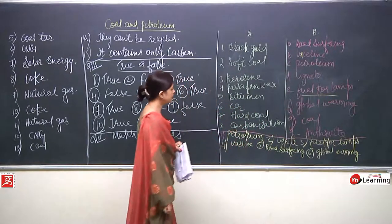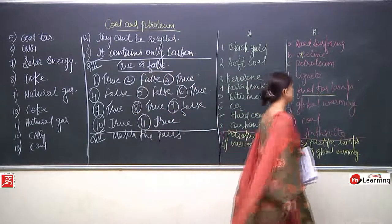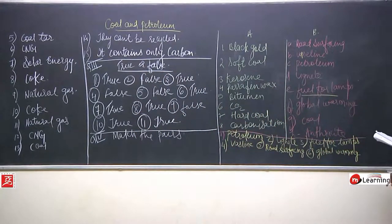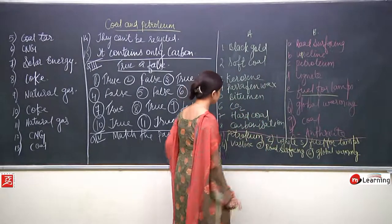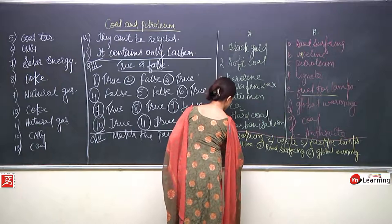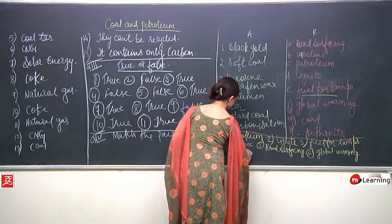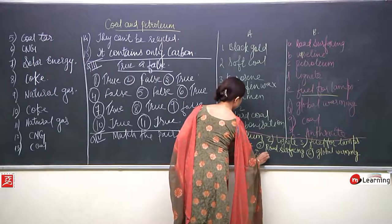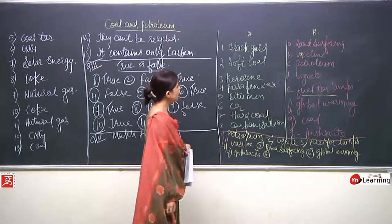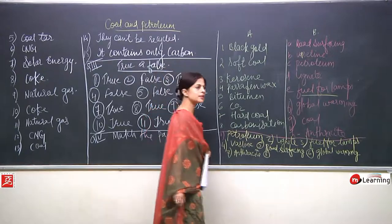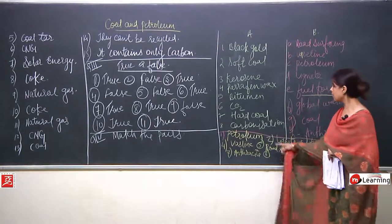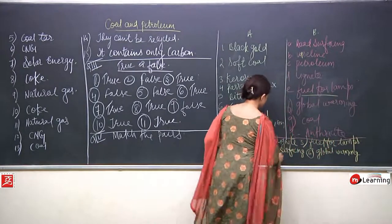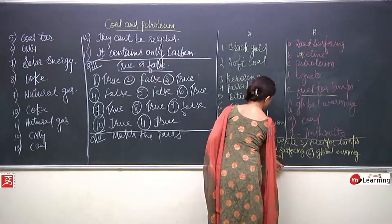Now only two are left — hard coal and carbonization. Hard coal: which is it? Anthracite — it is very easy, anthracite is a hard coal. Now the last one: carbonization. What is carbonization? It is a process through which wood gets converted into coal, a very slow process. So due to carbonization, coal is formed.